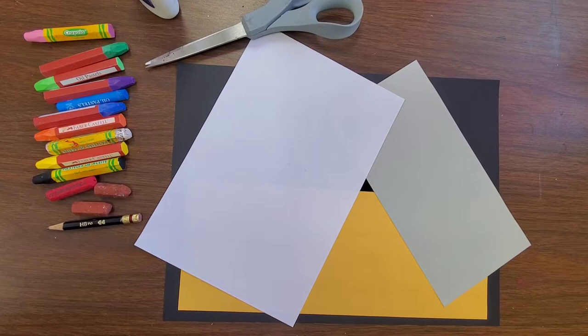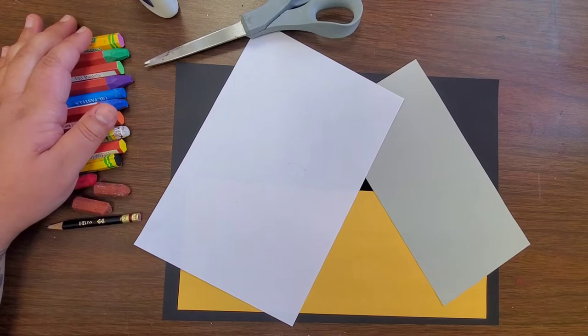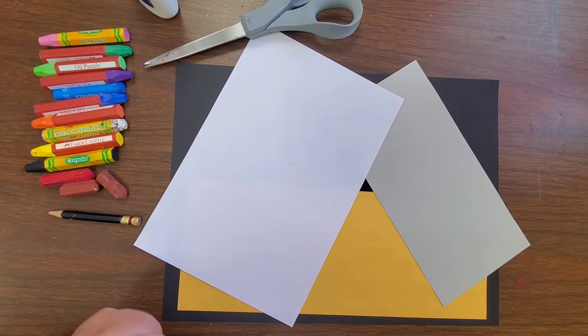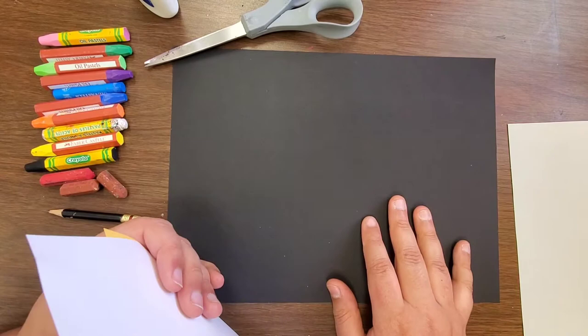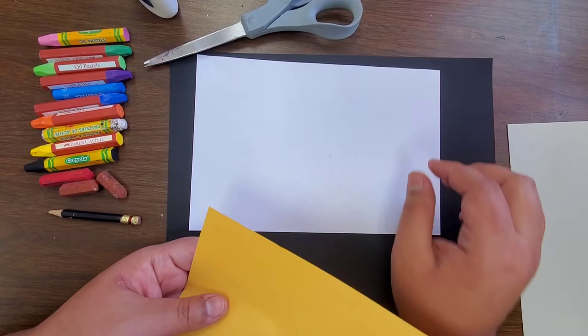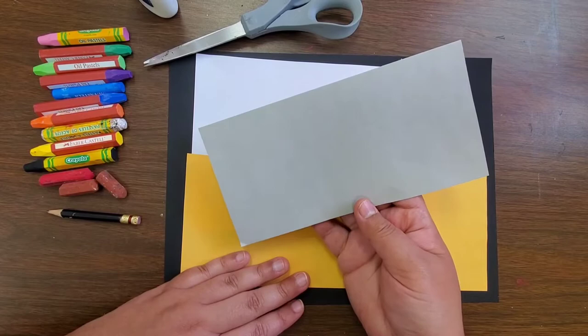For this project you will need a few different types of materials. I have some oil pastels here, but if you have crayons, crayons will work perfectly with this. You're also going to need a few different types of pieces of paper. You don't need to have black paper, I just like the way it looks. You'll need one piece of black paper, a half sheet of white paper, a half sheet of any type of color paper.